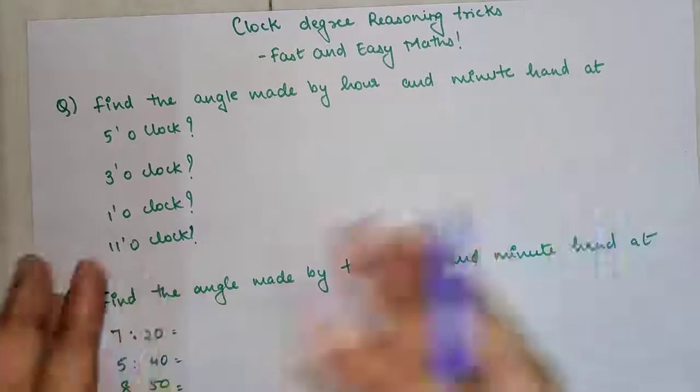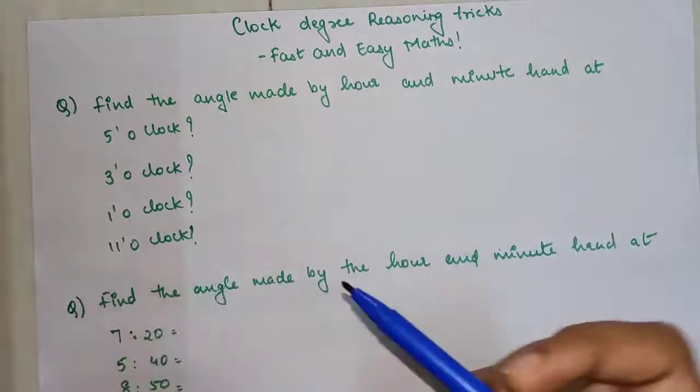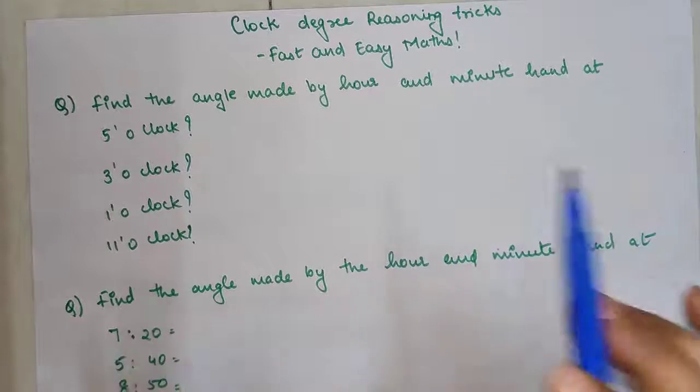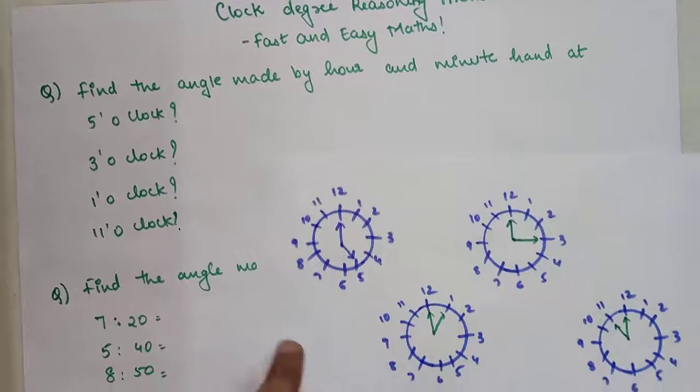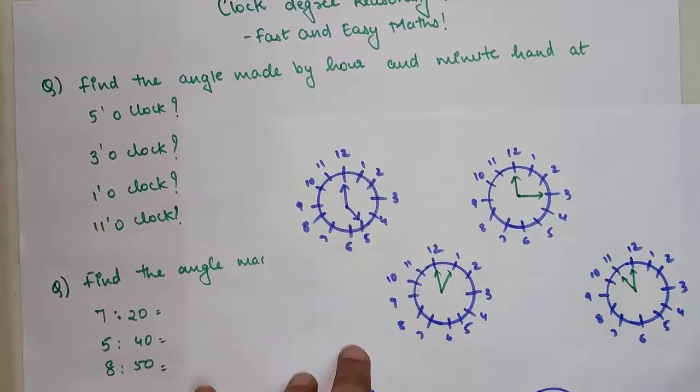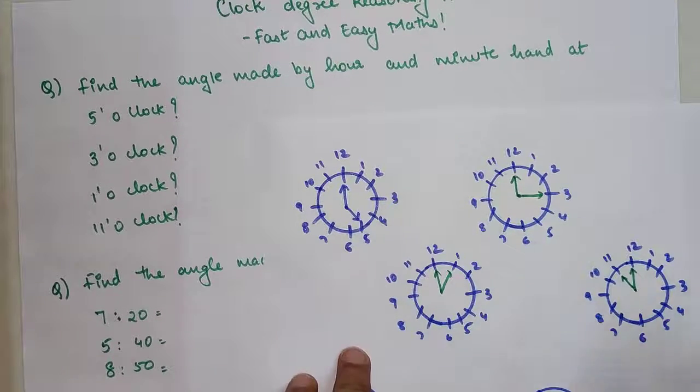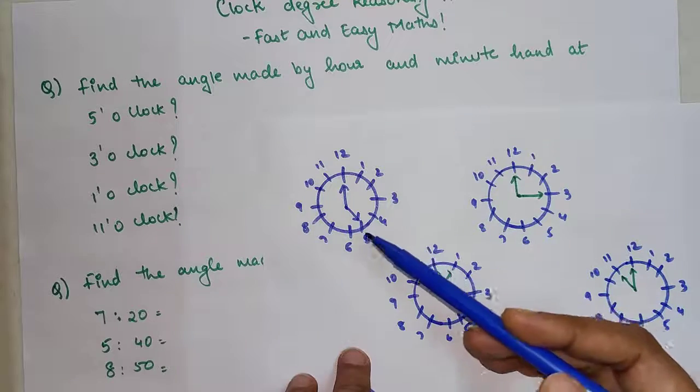Normally the question is you need to find the angle made by the hour hand and the minute hand in a clock. Now if you look over here we have a clock, please don't mind my drawing, and you have to find the angle.